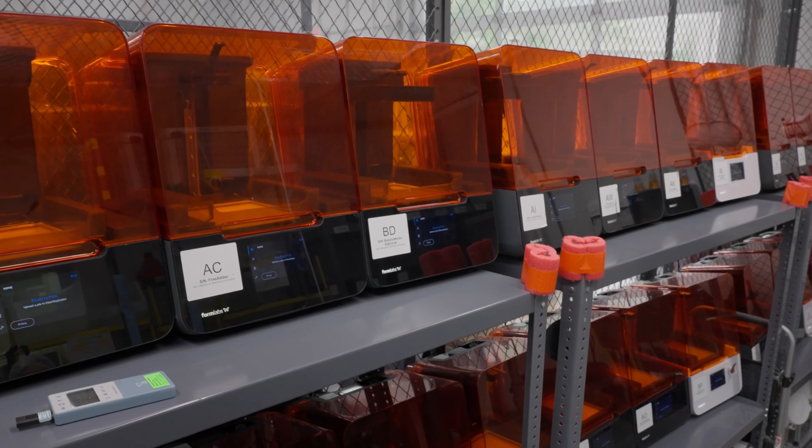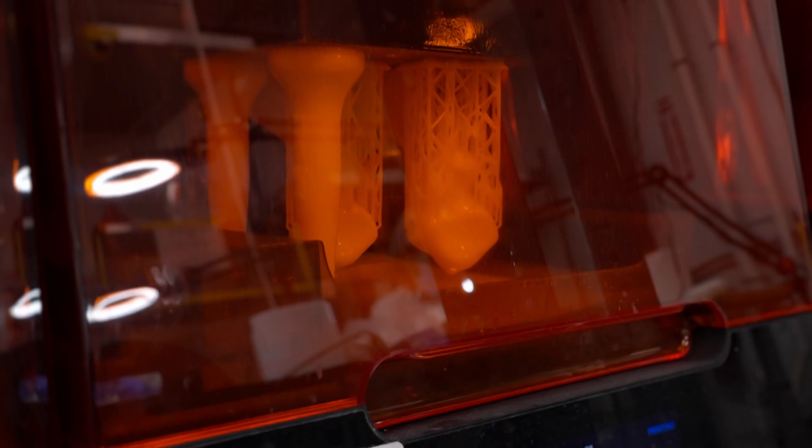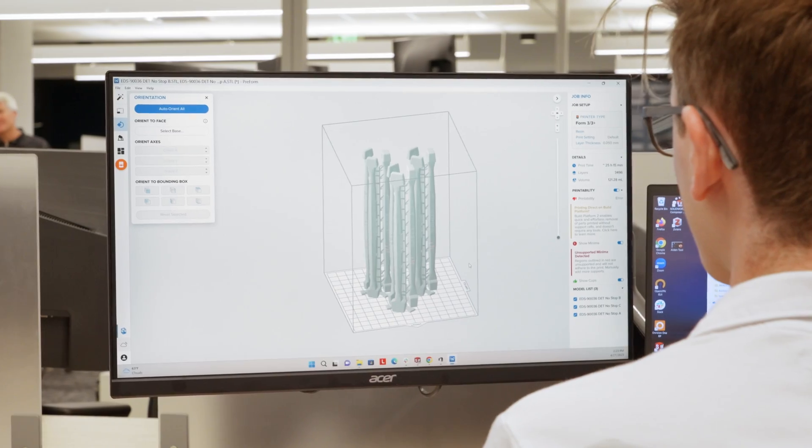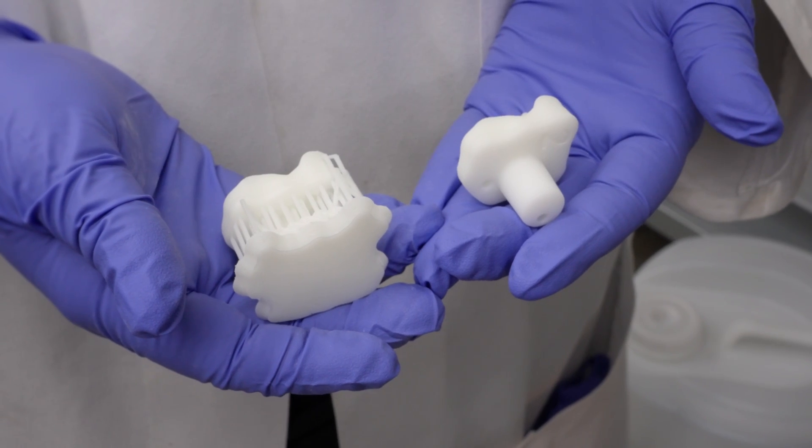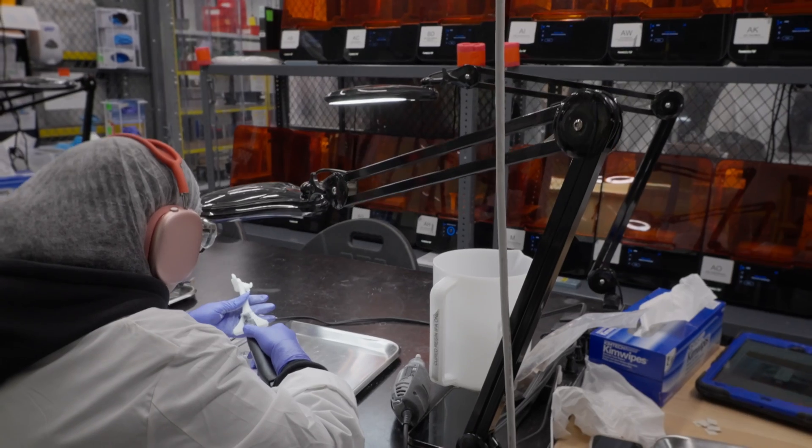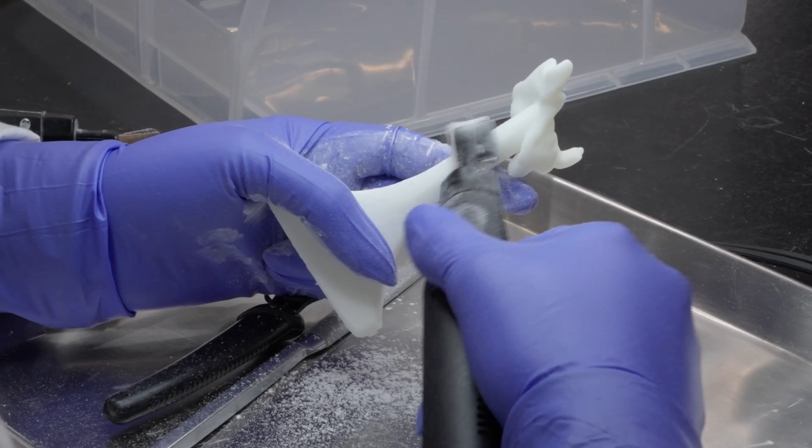The thing that we really like about using Formlabs printers is the flexibility that they provide us on the design end. We've worked with different printers and different applications, and often there are certain features that we find to be out of bounds due to specific print orientations, due to support material, particular cures that we have to use. When it comes to making any requests that a surgeon has, we're almost always able to provide that in a Formlabs material.